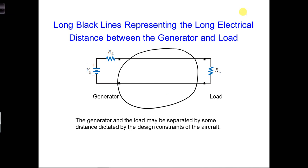Well, it would be important to include the physics of the long black lines if the wires or cables impact the propagating electrical signals in any way as they travel between the generator and the load.